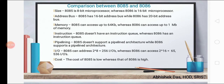Before going into detail about 8086, we have to know the comparison between 8085 and 8086. 8085 is an 8-bit microprocessor whereas 8086 is a 16-bit microprocessor. 8085 has a 16-bit address bus whereas 8086 has a 20-bit address bus. 8085 can access up to 64 kilobyte whereas 8086 can access 1 MB. 8085 doesn't have an instruction queue whereas 8086 has an instruction queue. 8085 doesn't support pipelining architecture whereas 8086 supports it. The cost of 8085 is low whereas the cost of 8086 is high.